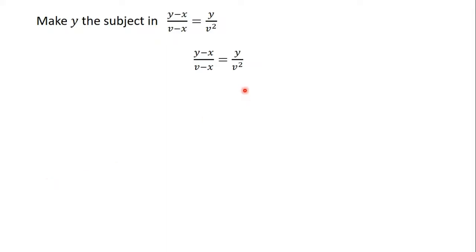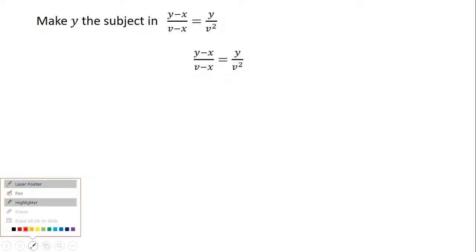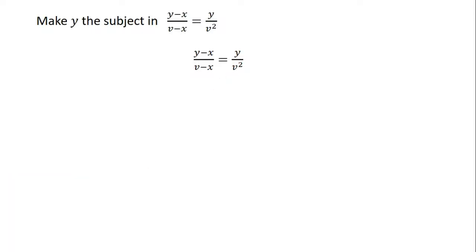As we have been doing in the previous videos, when we have been given an equation with a fraction, the first thing you need to do is to identify your fractions. The fractions in this equation are (y minus x) divided by (v minus x), and y over v squared. After you have identified the fractions, you will see that the denominators are (v minus x) and v squared, as we have here.